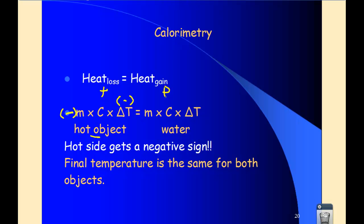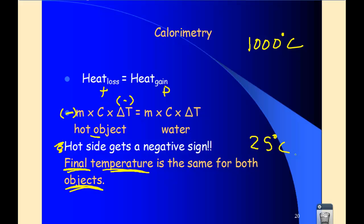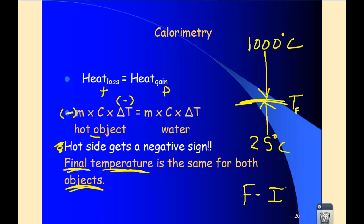Two key points: don't forget that the hot side gets a negative sign, otherwise your algebra doesn't work and you won't get the right answer. Also, the final temperature is the same for both sides — both the water and whatever was hot. Our piece of iron at 1,000 degrees and our water at 25 degrees — when we mix them, the temperatures will meet at an equilibrium. That will be the final temperature of both the hot object and the water. When we do delta T, remember: we always do final minus initial.